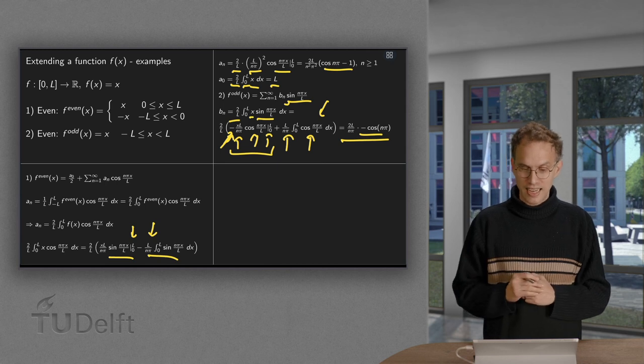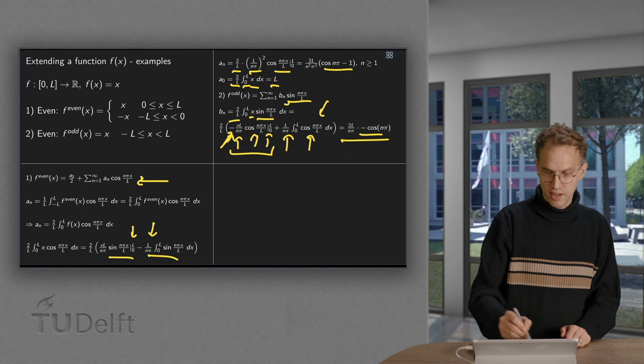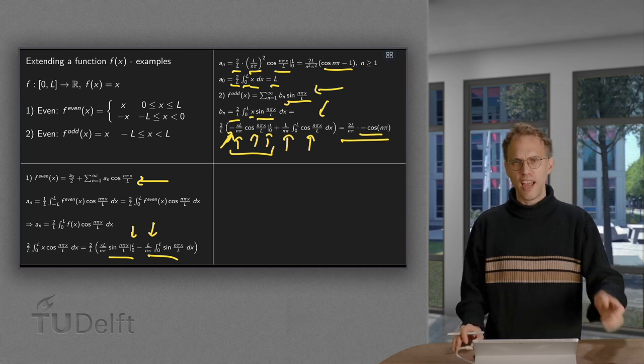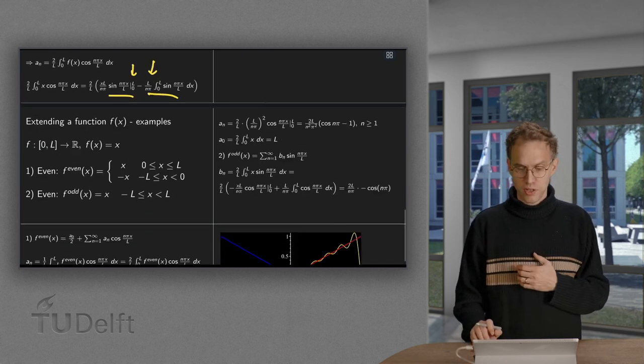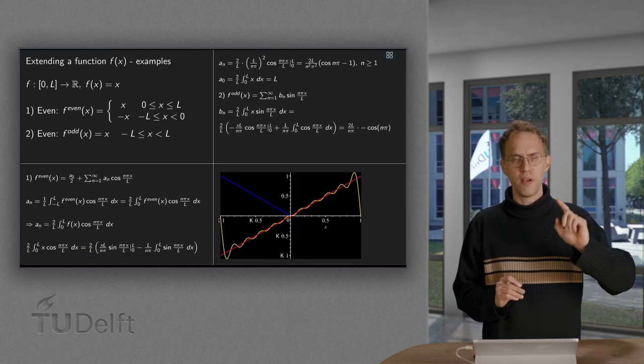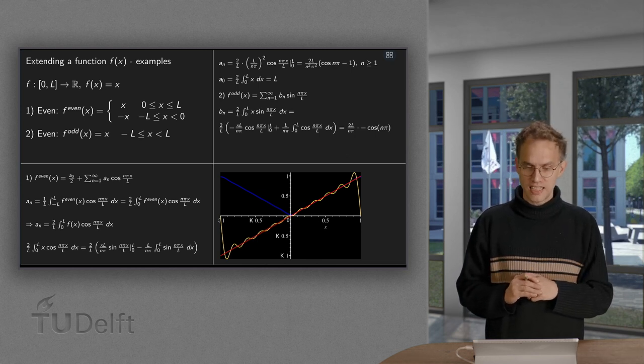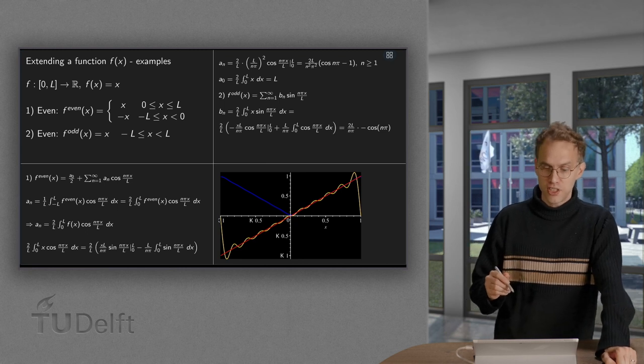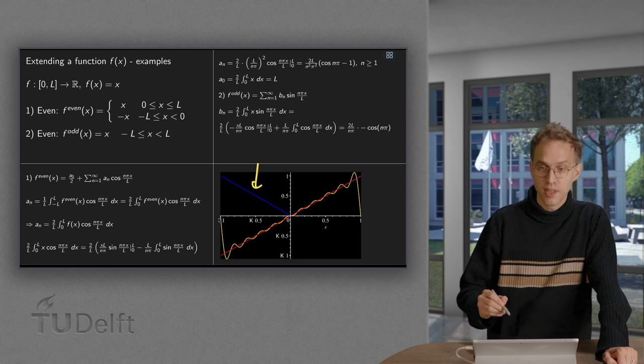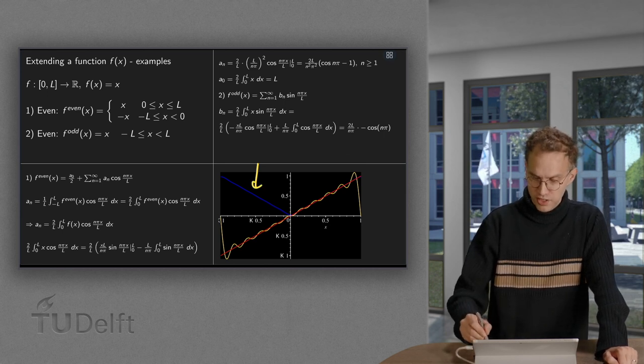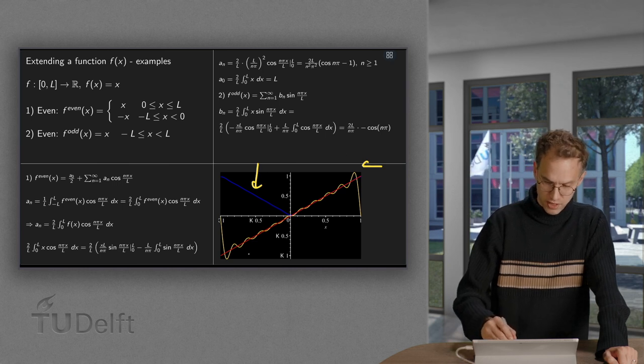Now, let us see what we then get if we make a graph of f even and f odd. We have to make a choice for l. Obviously, we have to cut it off somewhere, because I want to do it numerically. I think I used n up to 10 and not up to infinity. And what do we get then? Well, the Fourier series of the even extension is the blue one. The original function f of x is the red one, and the odd one is the yellow one.